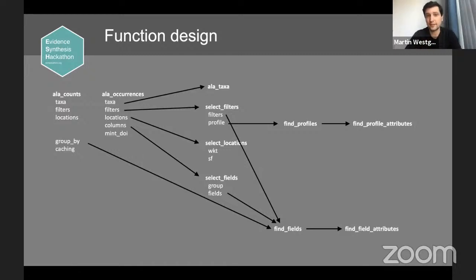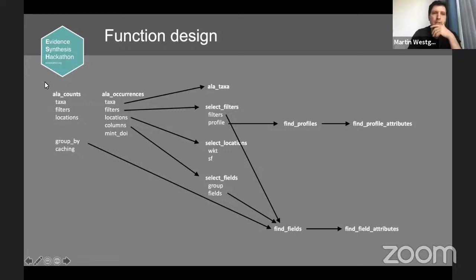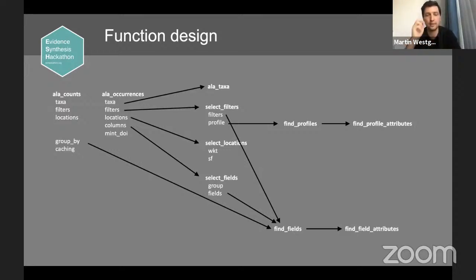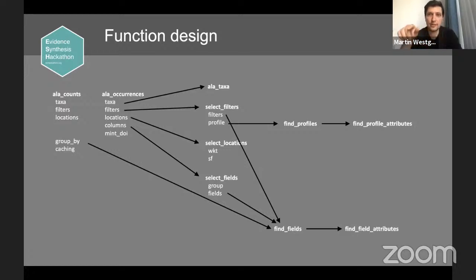We have a naming convention where the biggest functions — the ones people will call most of the time — have a standard prefix, which is ALA, short for Atlas of Living Australia, then an underscore, then what they do: get occurrences, get counts, get taxonomic information. The arguments underneath are human readable, and the name of the argument is a clue to the name of the function you need to call. So if you need to pass a filters argument to ALA_occurrences, you need to call select_filters. If you need location data, you call select_locations. The naming convention reflects the architecture and should make it easier to navigate, along with help pages that link to one another.